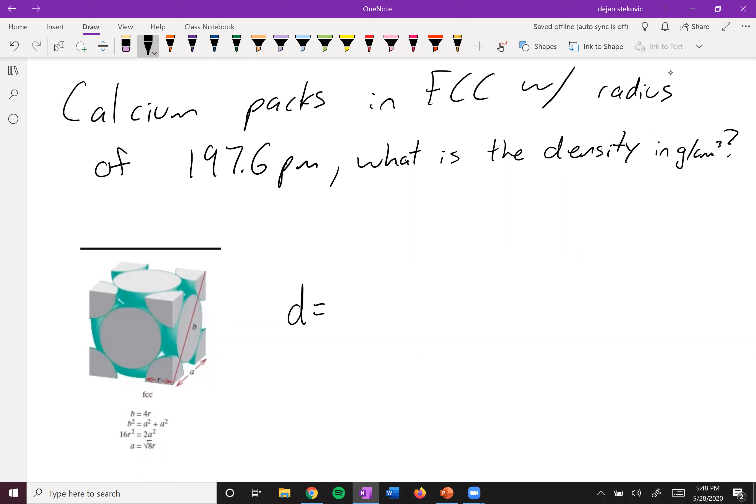So again, we know density is equal to mass over volume, and we know that we want density in grams per centimeter cubed. So let's take a look at this. For the volume part, we know that volume for a cube is equal to the length cubed, right? The length of one of the sides cubed.